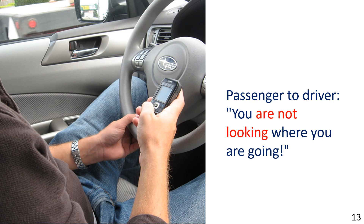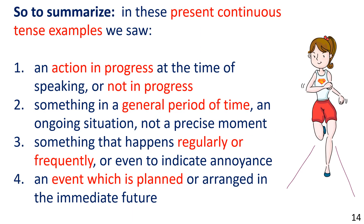To summarize, in these Present Continuous Tense examples we saw: 1. An action in progress at the time of speaking, or not in progress. 2. Something in a general period of time — an ongoing situation, not a precise moment. 3. Something that happens regularly or frequently, or even to indicate annoyance. 4. An event which is planned or arranged in the immediate future.